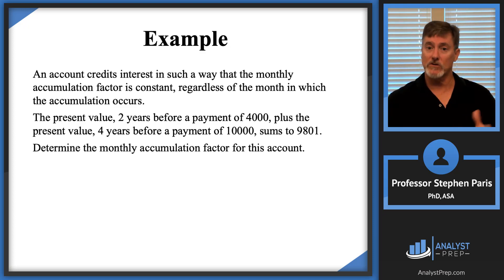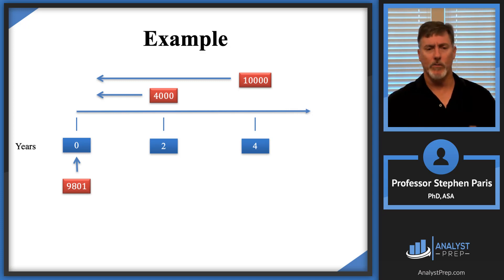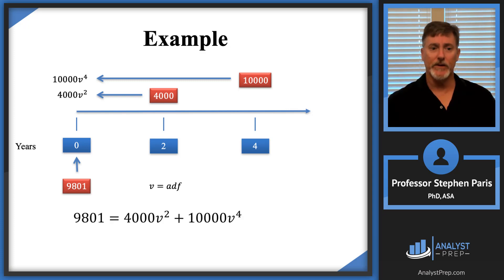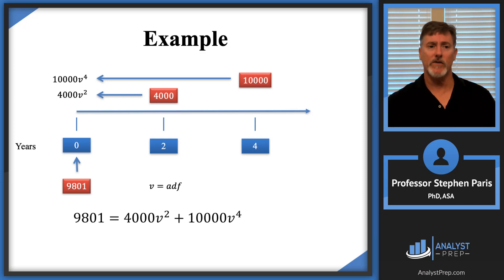If I choose years as the units on the timeline, the time values are 2 and 4. I have 4,000 at time 2 and 10,000 at time 4, with the total present value of these two payments still equal to 9801. This time v denotes the annual discount factor. The equation of value becomes: 9801 equals 4,000 times v squared plus 10,000 times v to the 4th, where v squared is the discounted value of 4,000 and v to the 4th is the discounted value of 10,000.